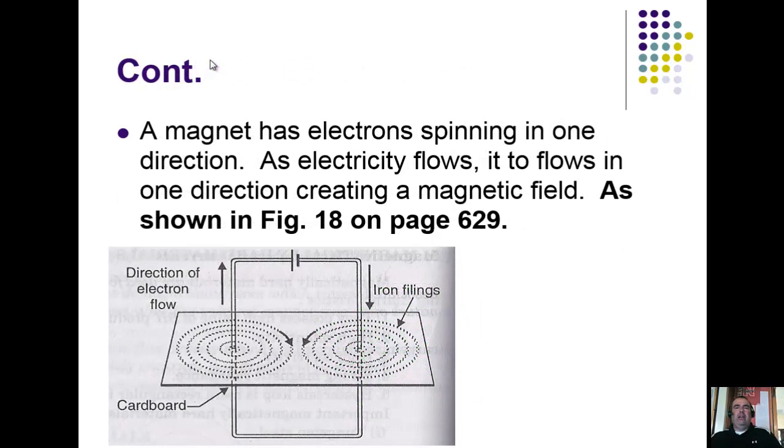A magnet has electrons spinning in one direction. As electricity flows, it flows in one direction, creating that magnetic field. When you look at an electric current moving through a wire, it caused that pattern to exist. This picture shows iron filings with a charge flowing up through that wire, creating a pattern showing what you saw with the magnet itself with those charges flowing around.